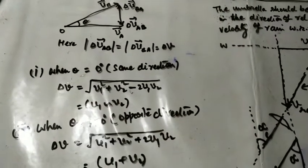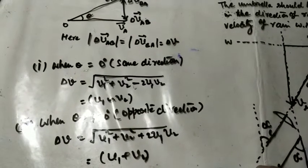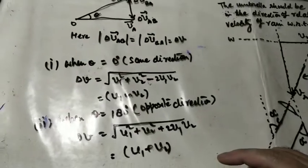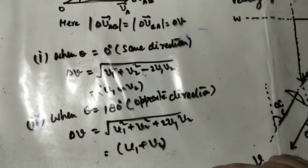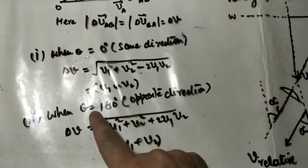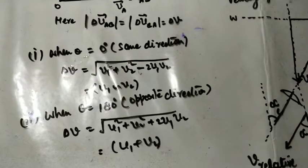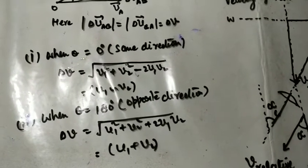Similarly, when two particles are moving in opposite directions, difference of two velocities, that is relative velocity, will be sum of the two velocities.